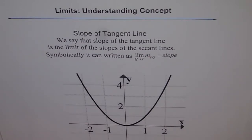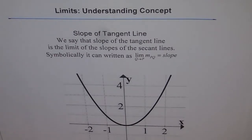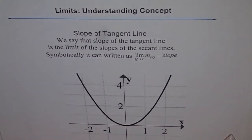A parabola is probably the simplest of all curved figures. So here we are exploring further using a parabola. We have a graph of y equals x squared. The question is: on this graph, how do we find the slope of the tangent line at a point? Graphically it is not very difficult — the answer may not be perfectly accurate, but it is not bad either.